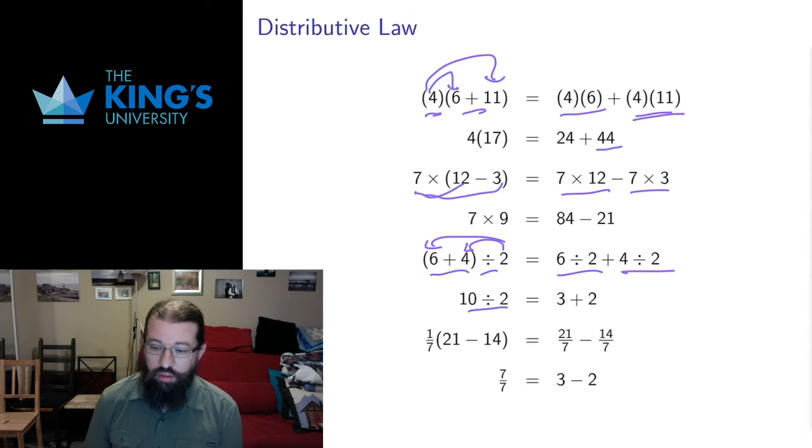And we get that 10 divided by 2 is 5. It's the same as 6 divided by 2 is 3 and 4 divided by 2 is 2. Add those up, we also get 5.